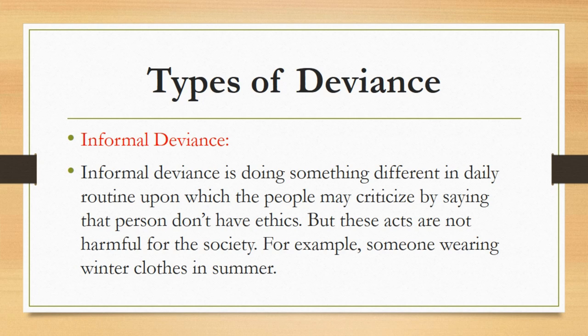They are against the social norms but not harming anyone. So in such a situation, there will be no legal action and no punishment. All those acts which are against the norms, values and culture of a society but are not harmful and not of serious type will be considered as informal deviance. To summarize: deviance which is of serious type, harmful for society and punishable is formal deviance, while deviance which is neither serious nor harmful for society and is not punishable is called informal deviance.